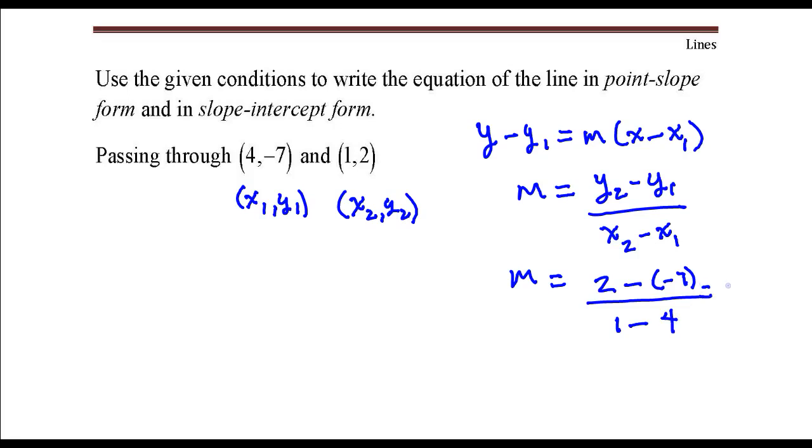Okay, so the slope here is, in the numerator, we have 2 minus a negative 7, that's a positive 9. In the denominator, we have 1 minus 4, that's negative 3. So 9 divided by negative 3, that's going to be negative 3.